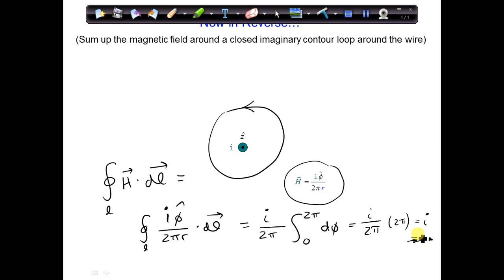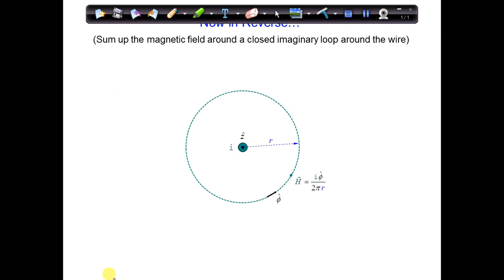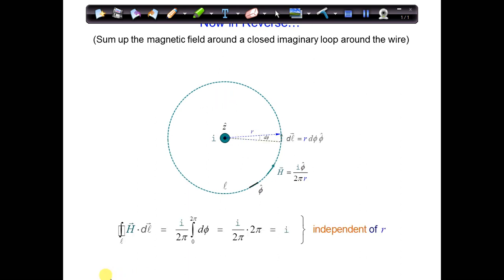So, if we know the magnetic field around the wire, we can figure out how much current was flowing to produce it. Alright, this circle is a lot better than the one that I had.